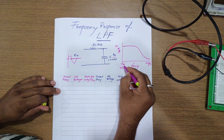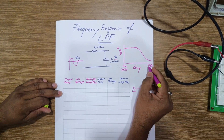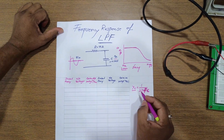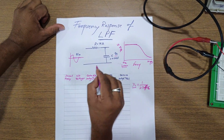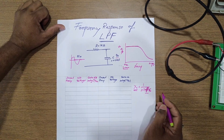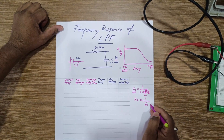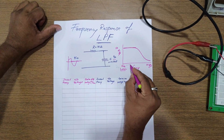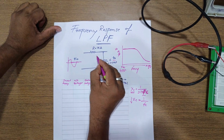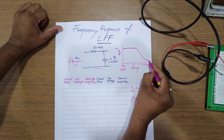At the start, when the input frequency signal is very low, you get maximum output. But as we go on increasing the input frequency, the output goes on reducing. This is because the reactance of the capacitance in shunt is X = 1 / (2πfC), meaning reactance and frequency are inversely proportional. As frequency increases, reactance decreases, so all the signal passes through the capacitor to ground, and at the output you get a low output.